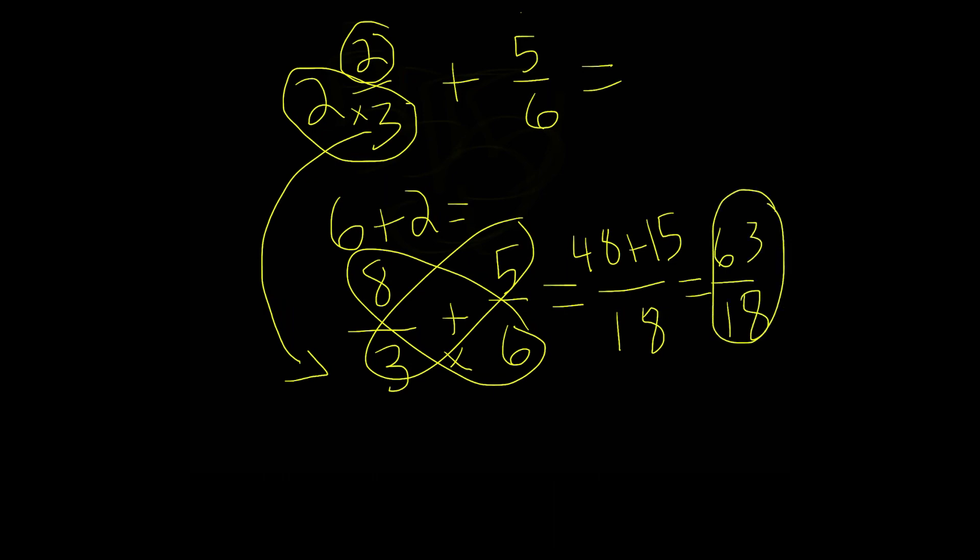And this is our answer, but we can actually convert this into a mixed number. So how we do that is we divide 63 with 18. How many times can 18 go into 63? Well, three times.